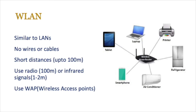As technology evolved we had the ability to create wireless local area networks, which are similar to LANs but there are no wires and cables. A LAN would probably require an ethernet cable to connect devices together; a wireless local area network doesn't. However, due to the limitations of wireless technology it's only effective up to distances of 100 meters — very short distances — whereas a LAN depended on the length of the cable. These wireless access points or routers use radio waves which go up to 100 meters, or infrared signals which are about 1–2 meters. The key hardware used is the wireless access point, and we'll look at this in more depth later.